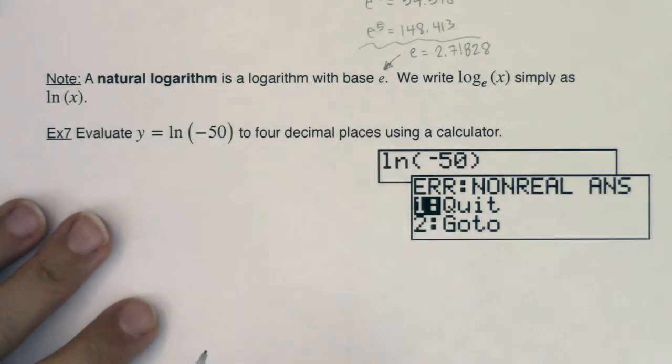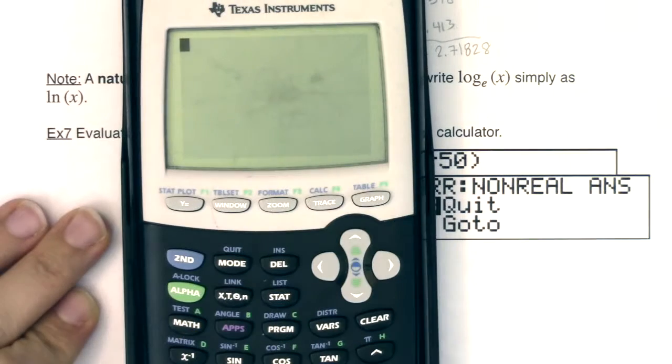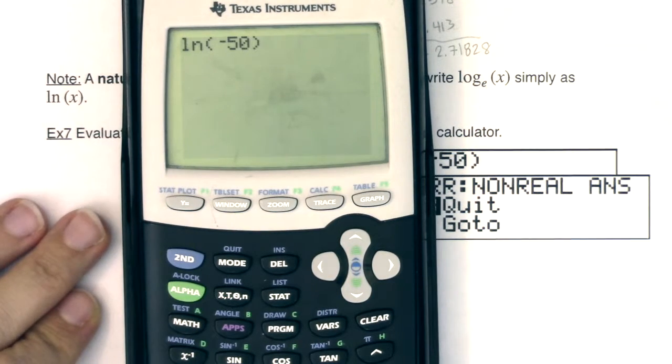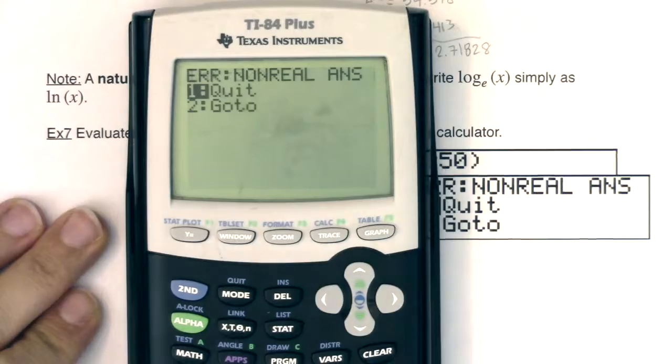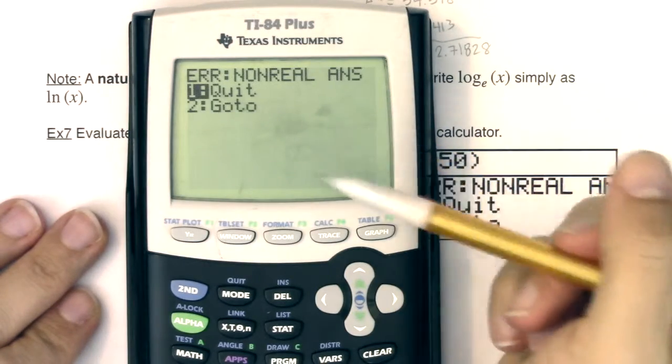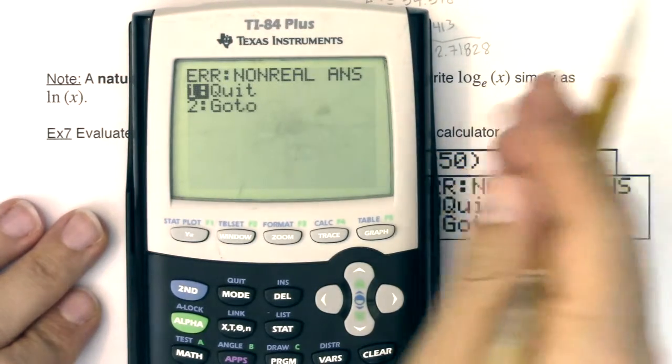I want you to see what's about to go wrong. So if you plug this into your calculator, if you hit your LN button and you type in negative 50, and then you hit enter, you're going to see it pop up, hey, there's not a real answer. There's a problem here.